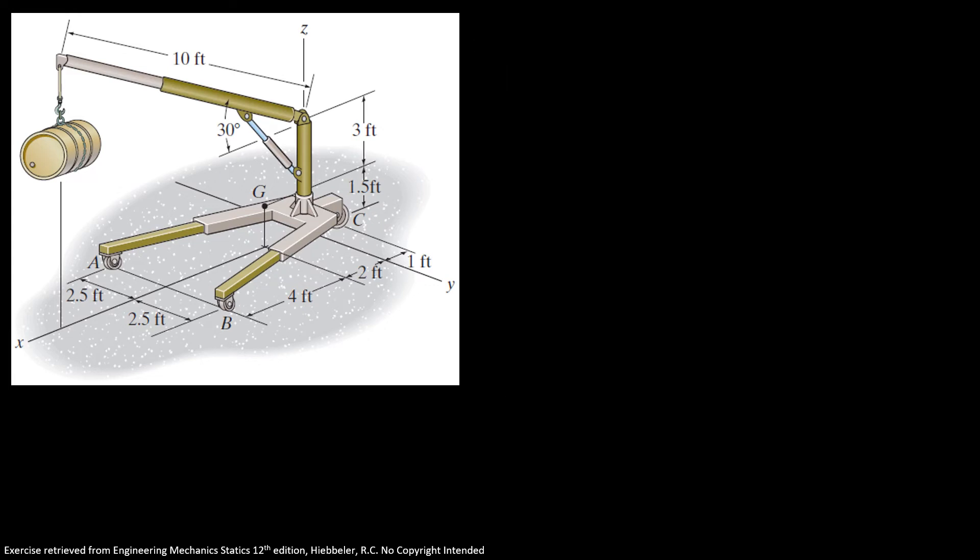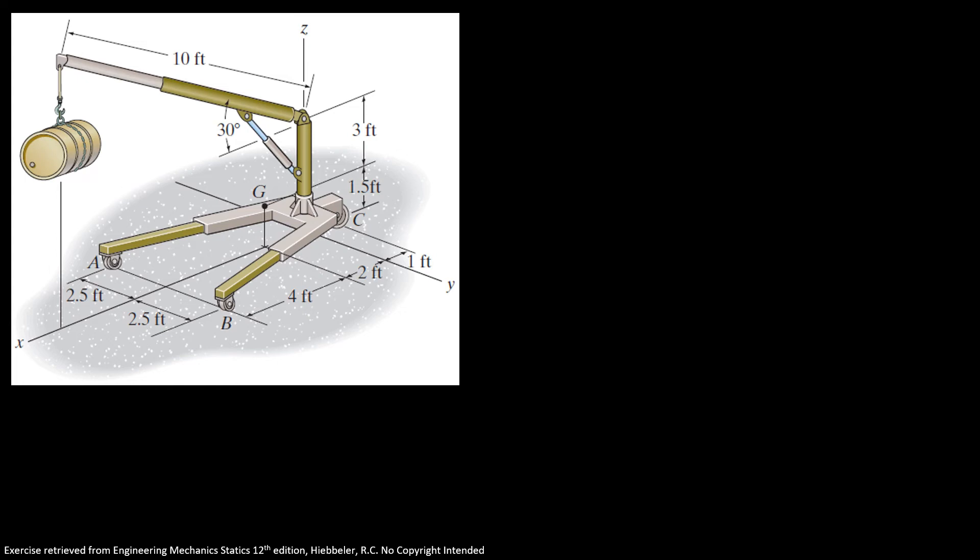Now, we can easily use the sum of moments in j is equal to 0, and then we're going to find 2.66 times the weight minus 1200 is equal to 0.